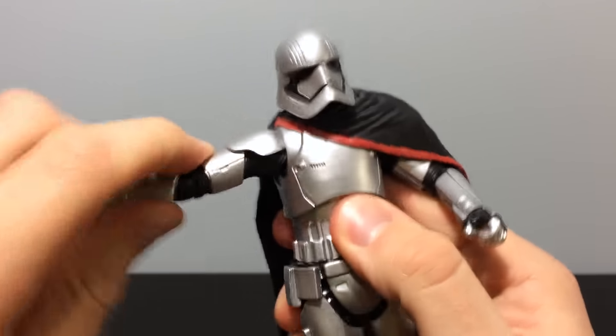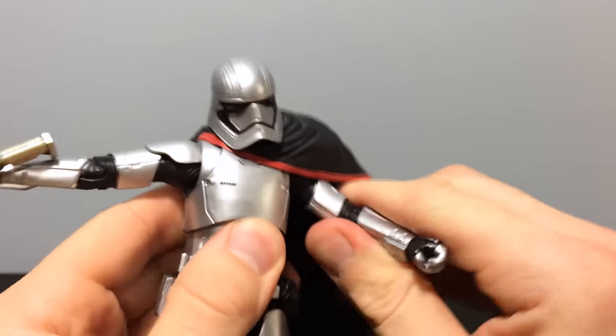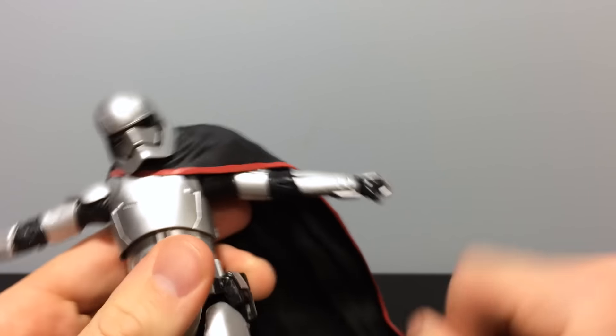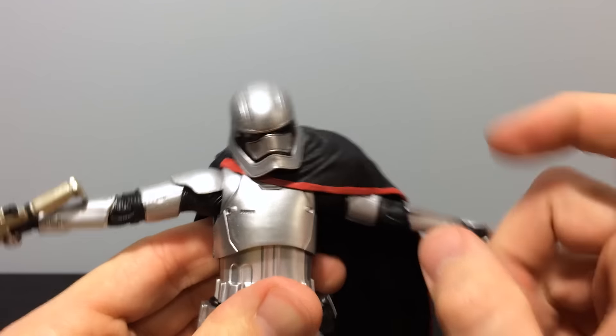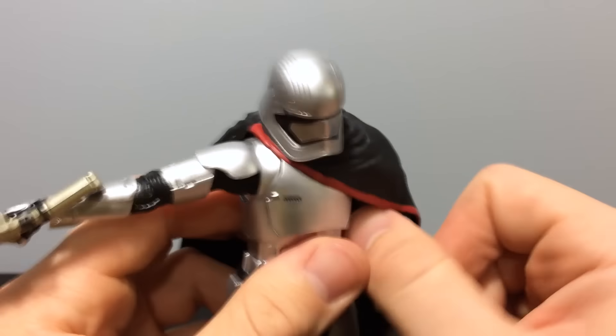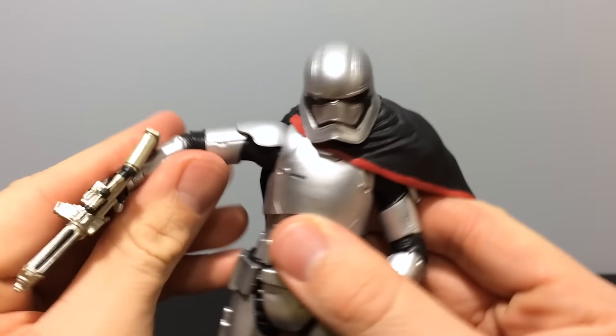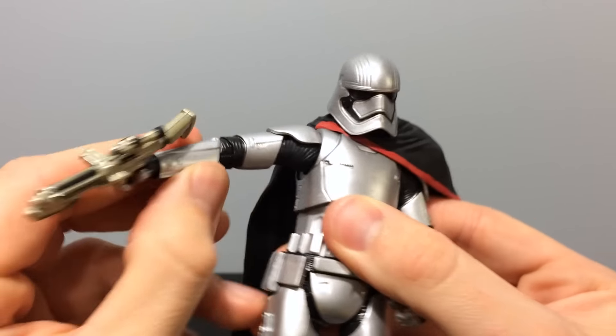So, articulation can go up. Oh, God. Don't even want to try. Barely. You're going to mess up her head if you do that. Arm can go a little backward, 90 degrees forward. 90 degrees forward, a little bit backward.